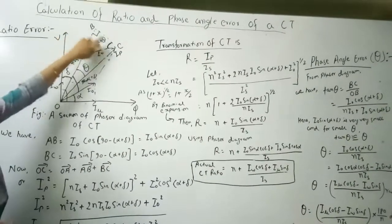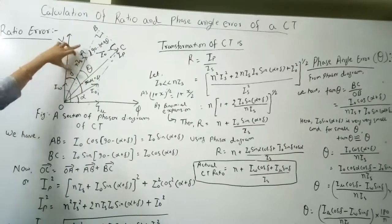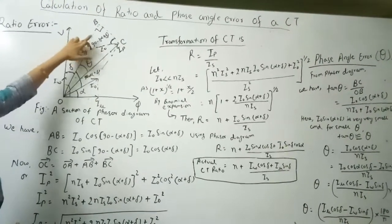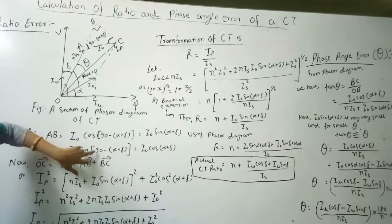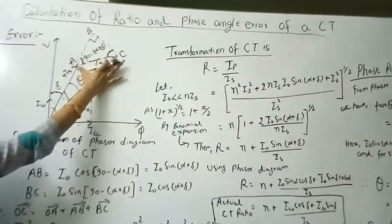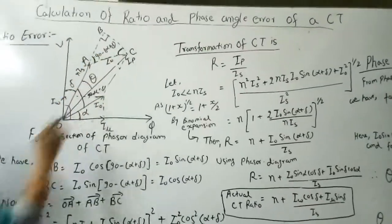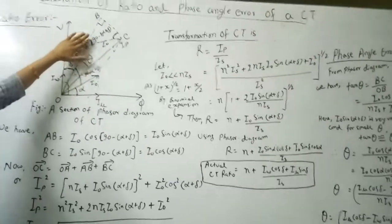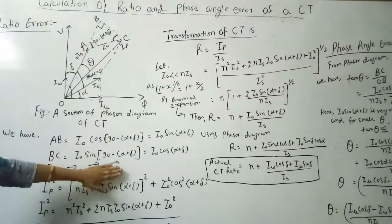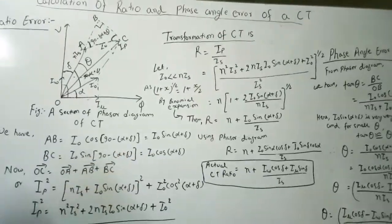Similarly, BC equals I₀ sin(90° − (α + δ)), which equals I₀ cos(α + δ). As you know, in a right-angle triangle we take the sin and cos components. So BC = I₀ cos(α + δ).